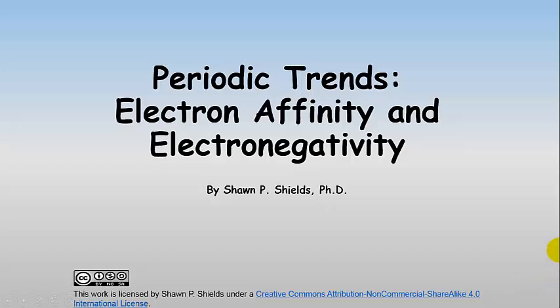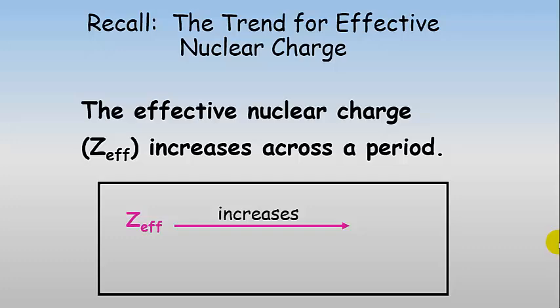Periodic trends: electron affinity and electronegativity. Let's remind ourselves again of the effective nuclear charge and the fact that it increases across a period — we've spent quite a bit of time discussing this. The attraction for outer electrons or valence electrons for the nucleus increases as we go across a period.